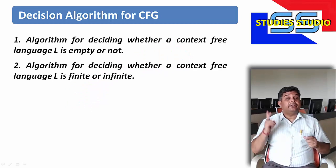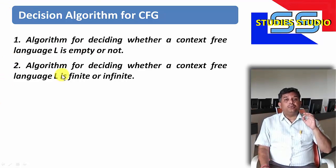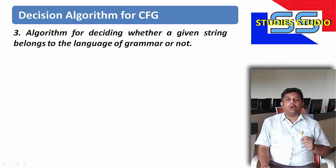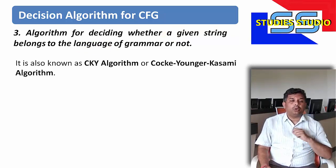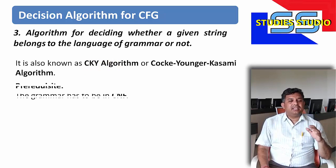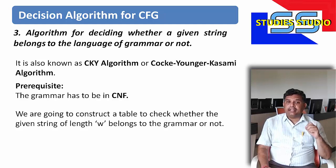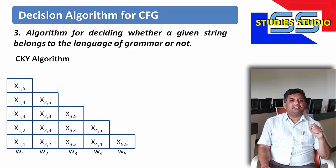In our previous video, we have seen the first two decision algorithms for context-free grammar: the algorithm for deciding whether a context-free language L is empty or not, and the algorithm for deciding whether a context-free language is finite or not. Today we are going to cover the third algorithm, where we decide whether a given string belongs to the language of a grammar or not. This algorithm is known as the CYK algorithm.